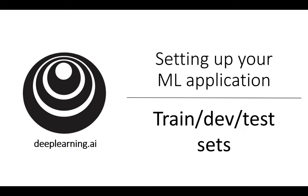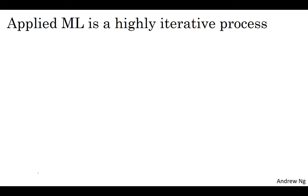Making good choices in how you set up your training, development, and test sets can make a huge difference in helping you quickly find a good high-performance neural network. When training a neural network, you have to make a lot of decisions, such as how many layers will your neural network have, and how many hidden units do you want each layer to have, and what's the learning rate, and what are the activation functions you want to use for the different layers. When you're starting on a new application, it's almost impossible to correctly guess the right values for all of these and for other hyperparameter choices on your first attempt.